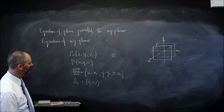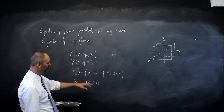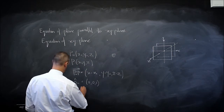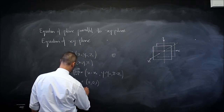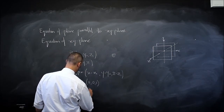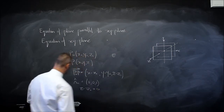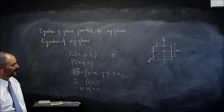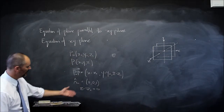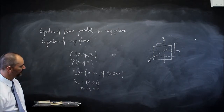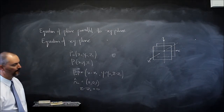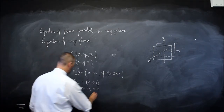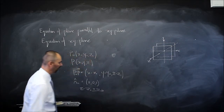If I take the dot product of (0, 0, 1) with P₀P: zero times (X-X₀) is nothing, zero times (Y-Y₀) is nothing, so I'm left with Z - Z₀ = 0. That gives me the equation for a plane parallel to the XY plane. As simple as that.